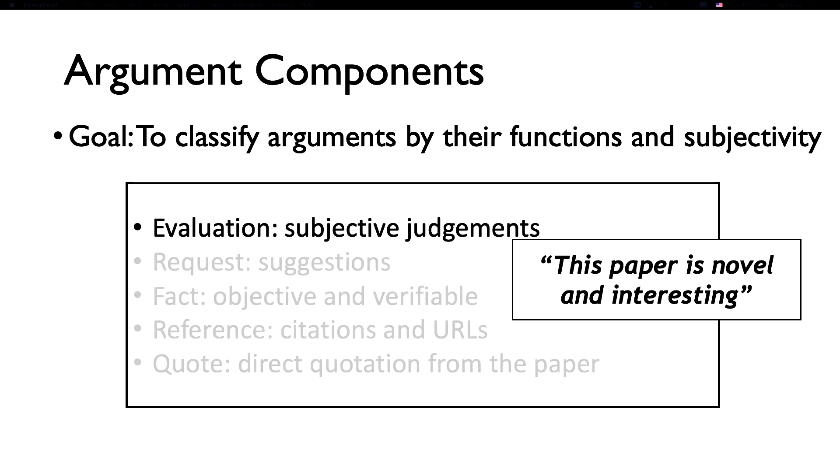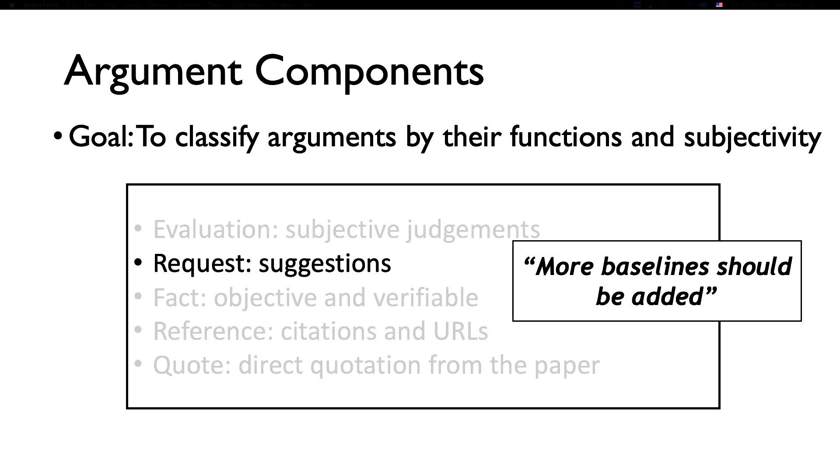We come up with these five major argumentative types. An argument of type evaluation is a subjective and opinionated judgment, such as 'this paper is novel and interesting.' The reviewer also provides requests, which are suggestions and recommendations with a course of action to be taken, such as to compare with more baselines.